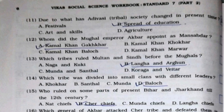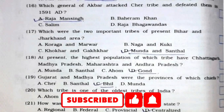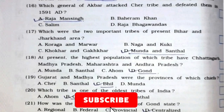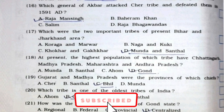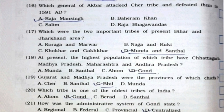Fifteenth: Who ruled on some parts of present Bihar and Jharkhand till the 12th century? It's option number B, Chair chiefs. Sixteenth: Which general of Akbar attacked the Chair tribe and defeated them in 1591 AD? It's option number A, Raja Man Singh. Seventeenth: Which were the two important tribes of present Bihar and Jharkhand area? It's option number D, Munda and Santhal.